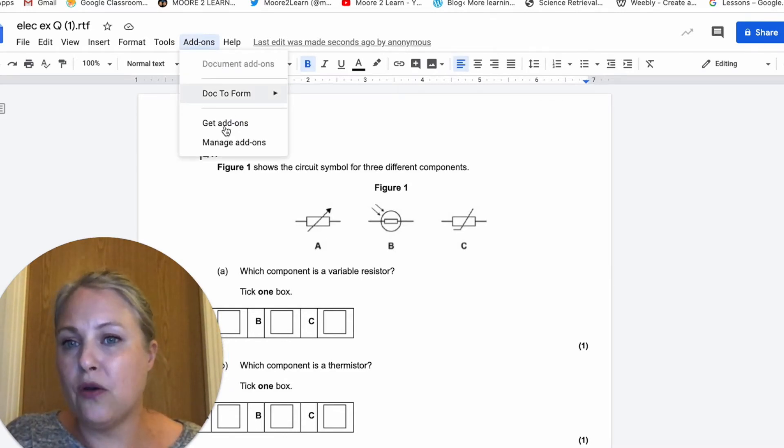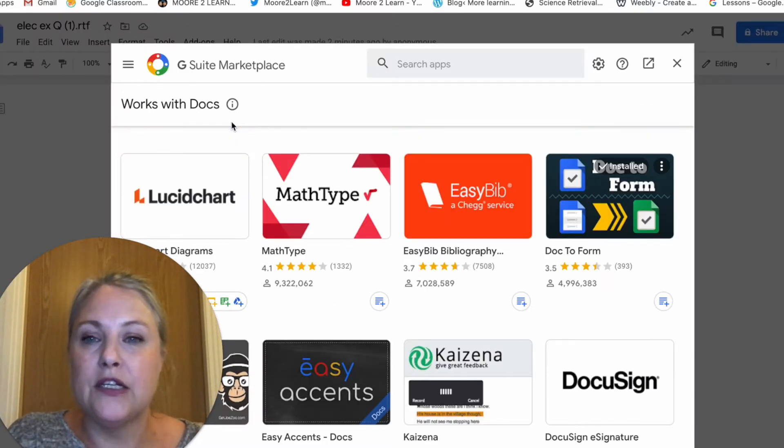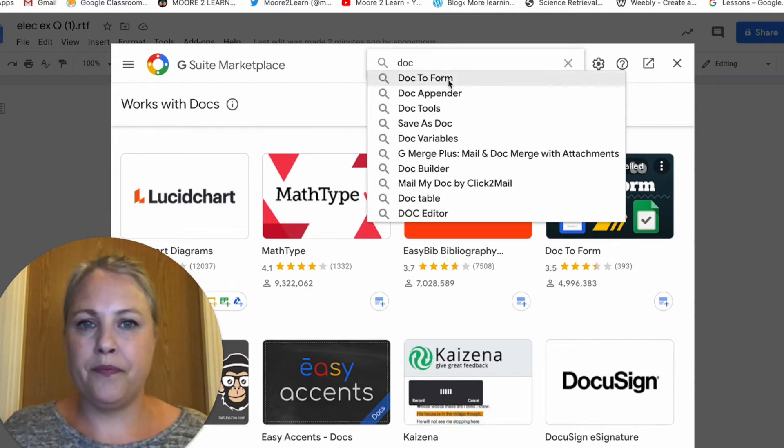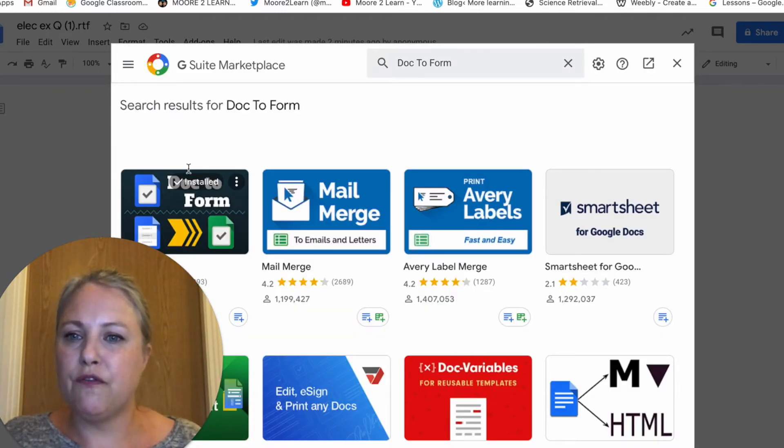So how I got that was just go to Get Add-ons and there's loads of them. So here is where you can find your add-ons. If you just typed in Doc to Form, you'll find this one here which is the one I've got.